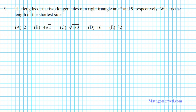Let's take a look at question 91. It says the length of the two longer sides of a right triangle are seven and nine respectively. What is the length of the shortest side? We're dealing with a right triangle, given two sides, and asked to find the third side. That's an automatic application of the Pythagorean theorem.